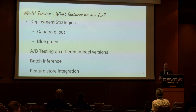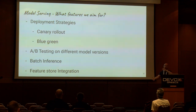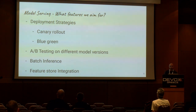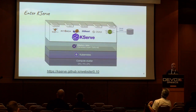You also need to be able to do A/B testing — get some traffic, test things, and see how the new model behaves. You need support for batch inference: instead of doing prediction per request, you aggregate the requests, create a vector, hit the model, and then send results back per request — a multiplexed approach. Another important thing is to be able to integrate with other components like feature stores. These are really critical requirements. The way to solve this problem on Kubernetes is KServe.